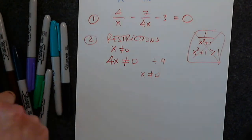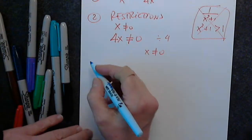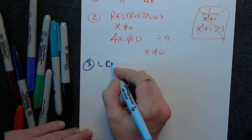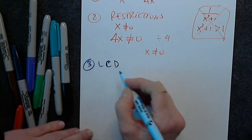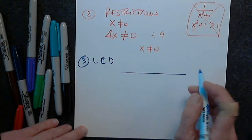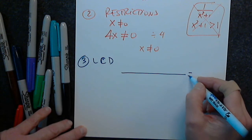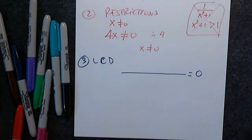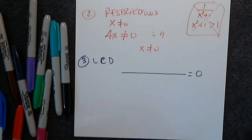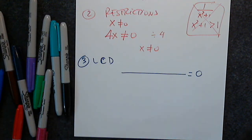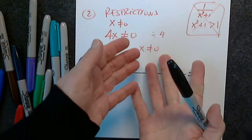Now in step 3, find the LCD. Remember: fraction line, equal symbol, and 0. If I forget the equal symbol and 0, I'm not solving anymore — I'm only simplifying an expression. I need to solve for x, get x by itself at the end, and also check against the restrictions.